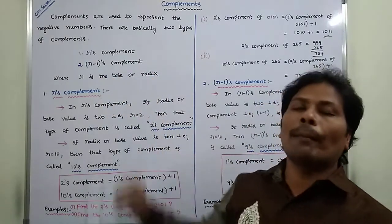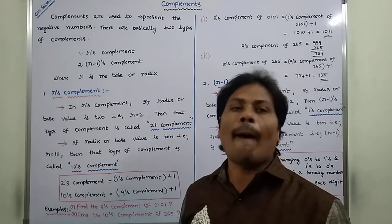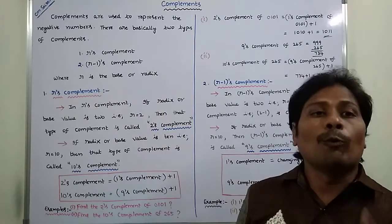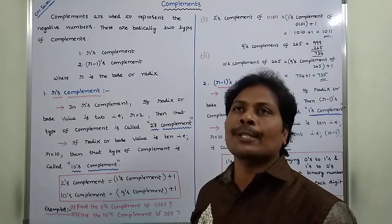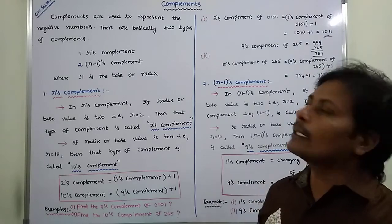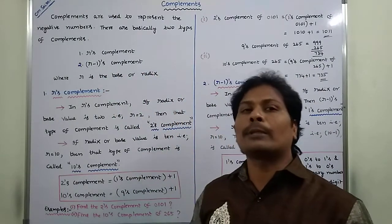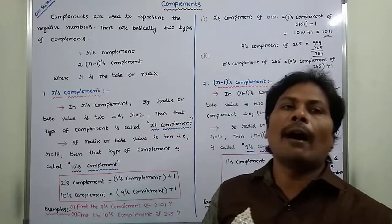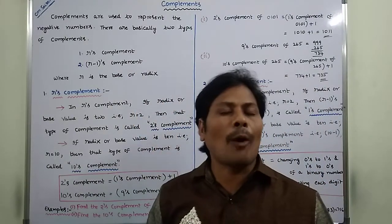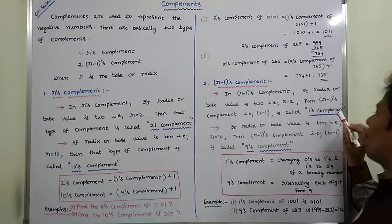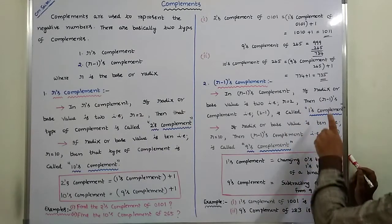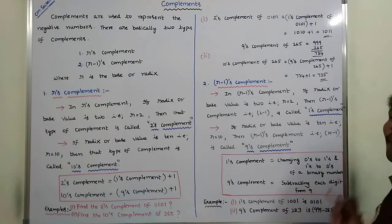In R-minus-1's Complement, there are two types of complements available. If R is equal to 2, then that type of complement is called 1's Complement, because R minus 1 with R equal to 2 gives 2 minus 1 equals 1. If Base or Radix R value is 10, substitute 10 in place of R: 10 minus 1 is 9, so that type of R-minus-1's Complement is called 9's Complement. So in R-minus-1's Complement there are two types: 1's Complement and 9's Complement.